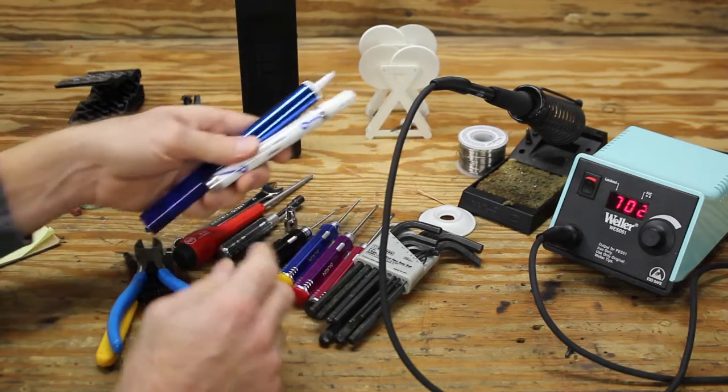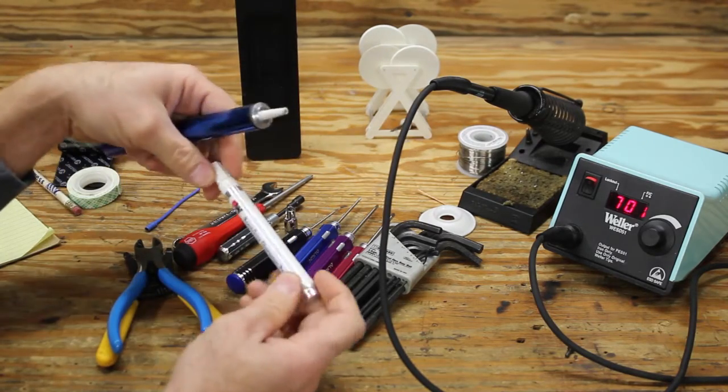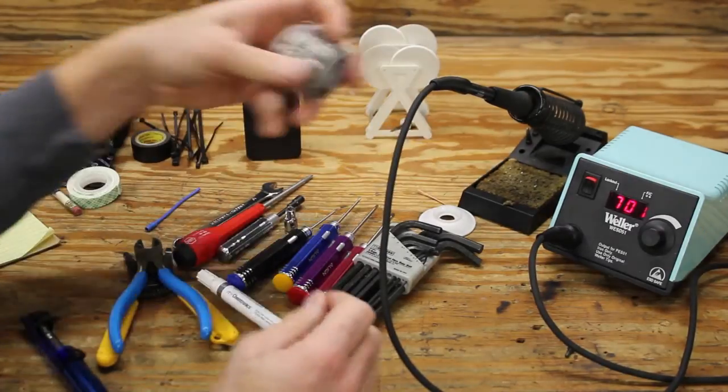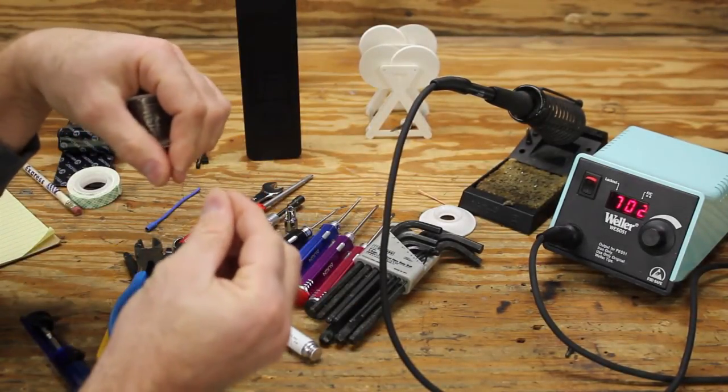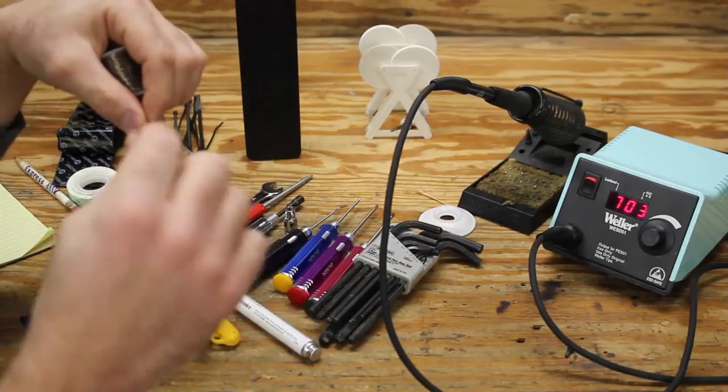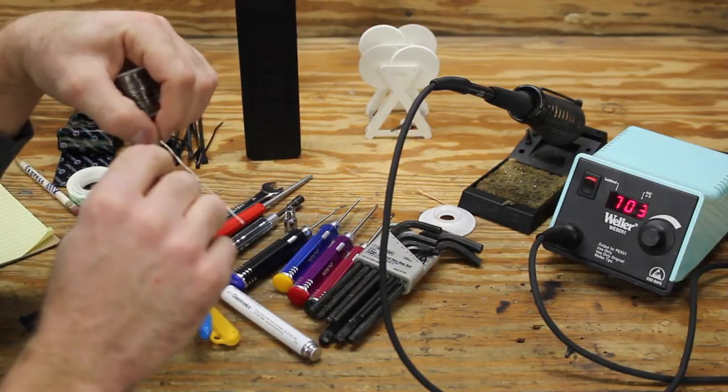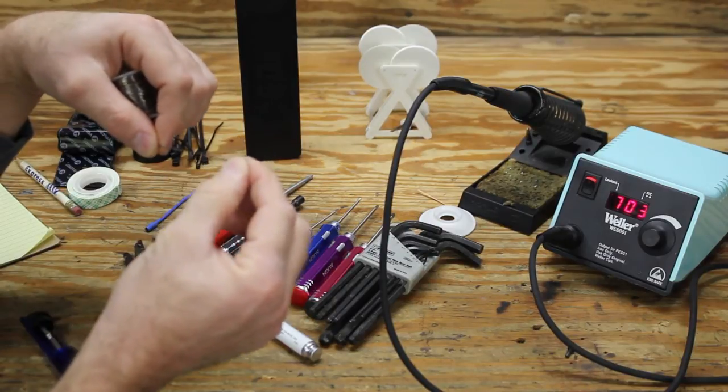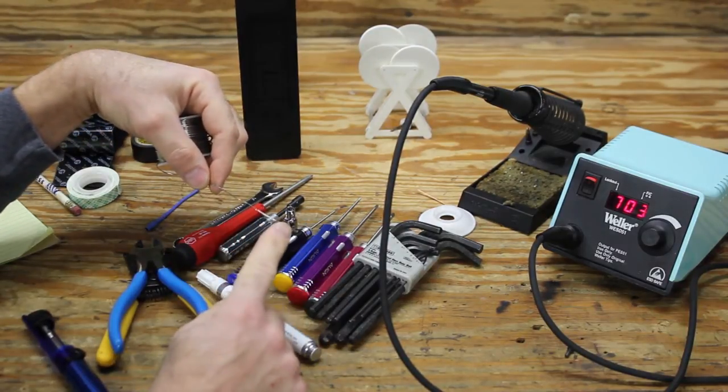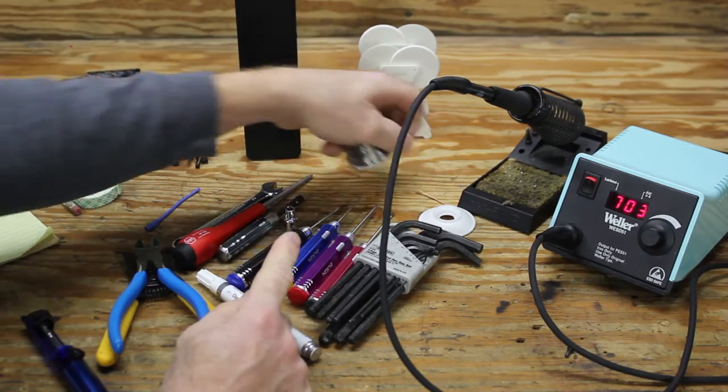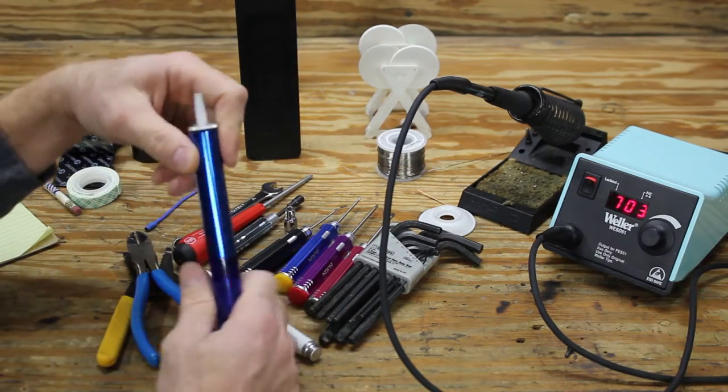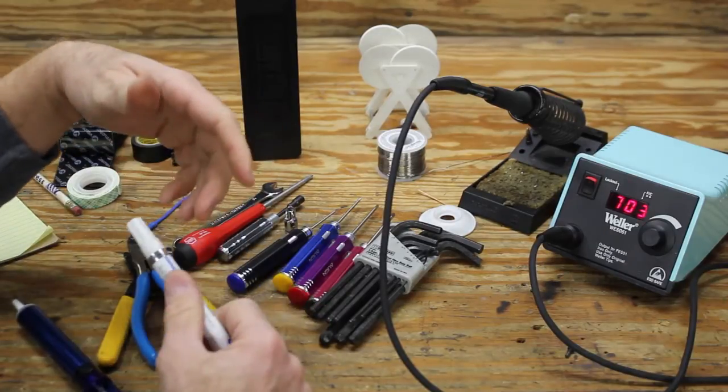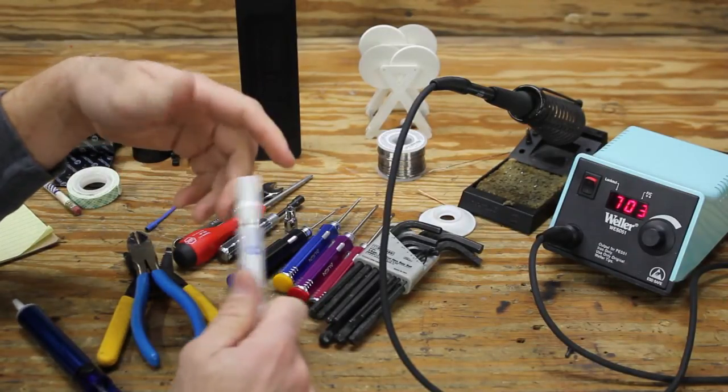Along with the soldering iron and the solder, a rosin pen is very helpful. When you use the solder, it actually has rosin in it. Rosin is an acid that cleans the surfaces that are being soldered as they're being soldered. The rosin cleans and also helps the solder to remain very fluid. So if you have a joint that you've had to take apart and you're putting it back together again, you don't really want to add any more solder, but you want it to flow nicely.